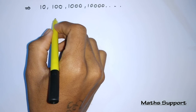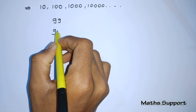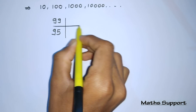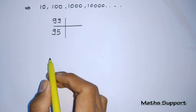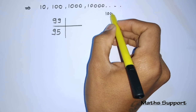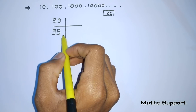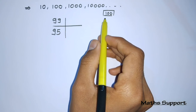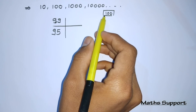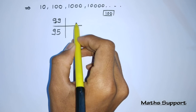Suppose you want to multiply 99 with 95. How do we multiply these two numbers easily? These two numbers are definitely nearer to 100, so here we are taking base 100. Now first we will write how far each number is from the base 100. 99 is 1 less than 100, so we write minus 1.